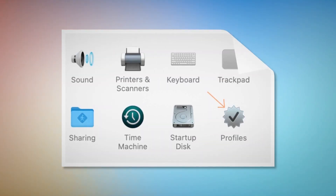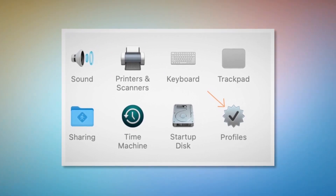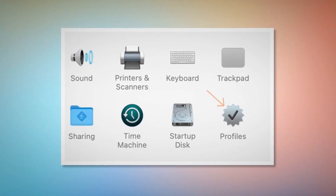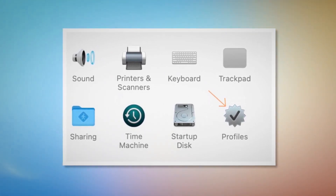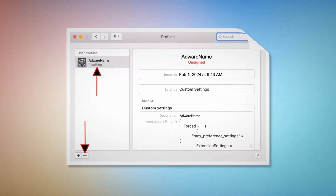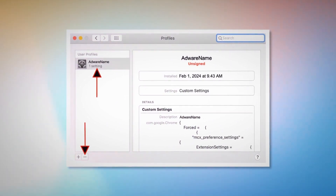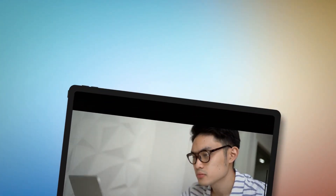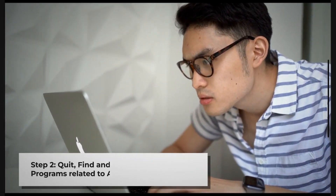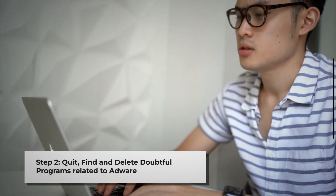But if you can find the Profiles icon, as shown in the screenshot, then click on it. Once you click on the Profiles icon, you will be taken to a window like this. As shown in the screenshot, select the Unknown or Doubtful Profile and then click the minus button to remove the profile. If you can't find any Profiles icon as mentioned in Step 1, just follow Step 2 directly.